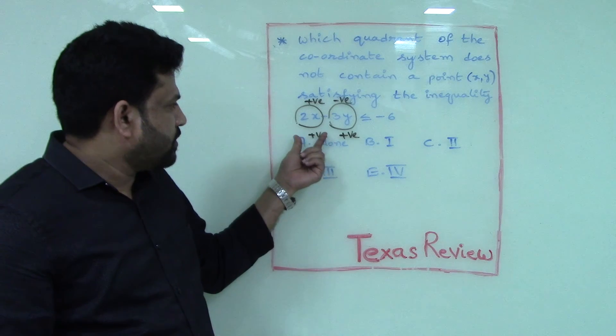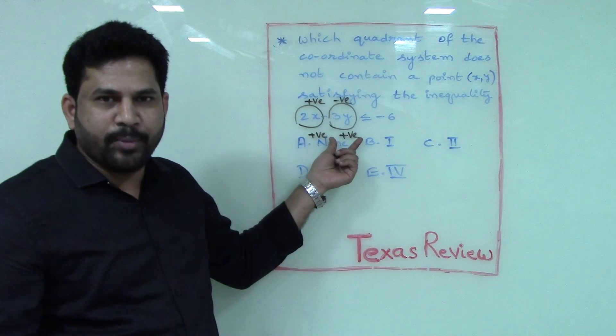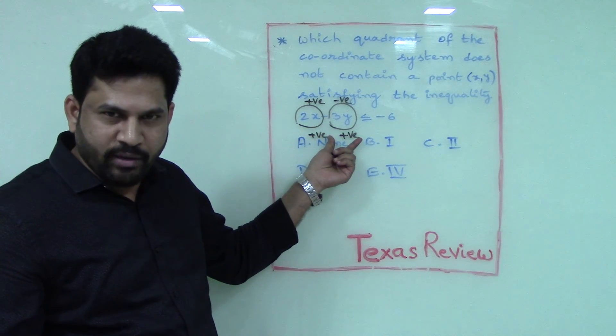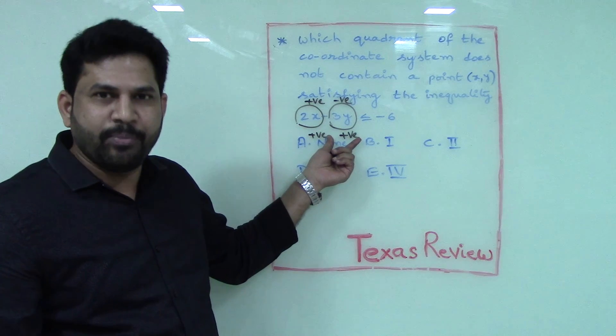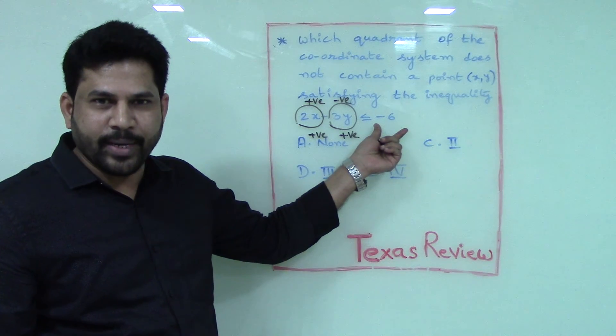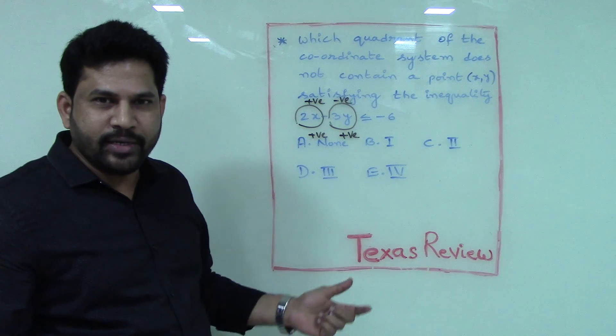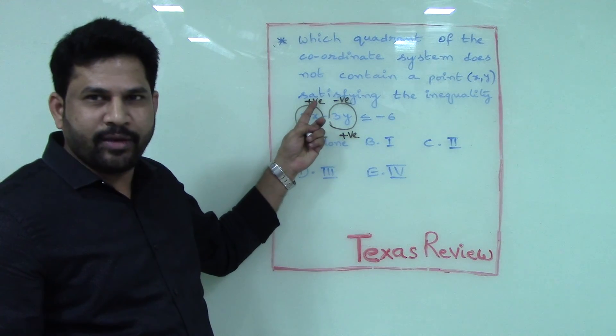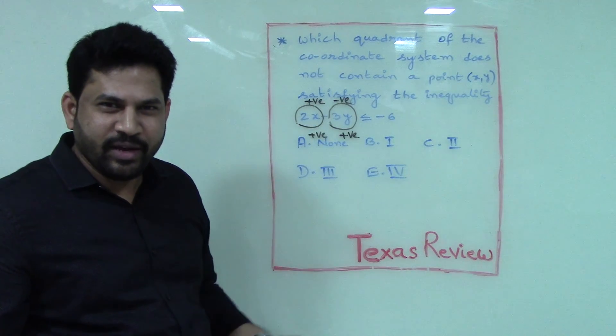The sum of two positive quantities together is again positive, which can never be less than a negative quantity. So, in which quadrant is x positive and y negative?